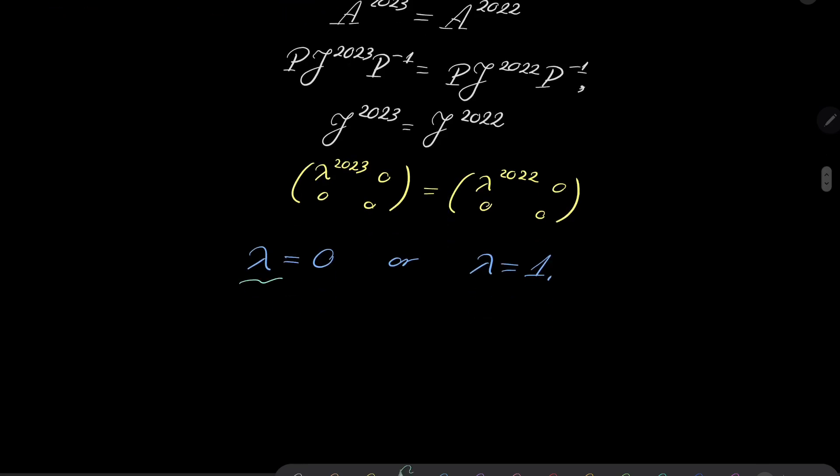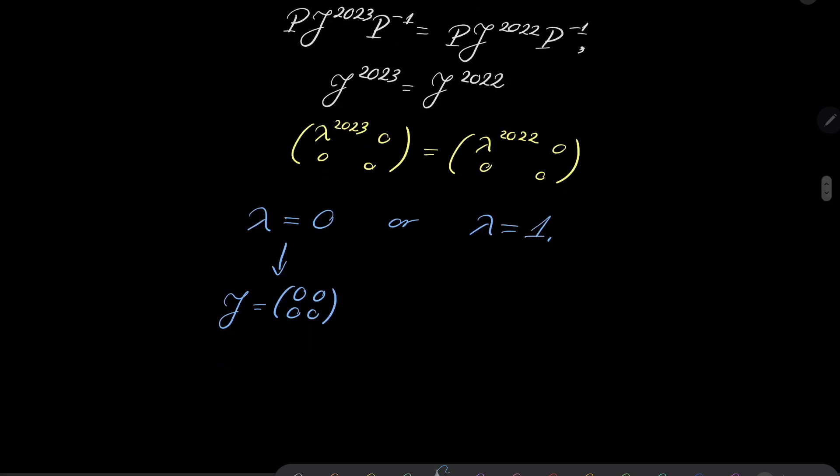Well, in this case, if lambda is zero, well, A is just the zero matrix. Or rather, J is the zero matrix. But of course, this means that A is the zero matrix. And this, of course, implies that A cubed equals A squared. No problems there.